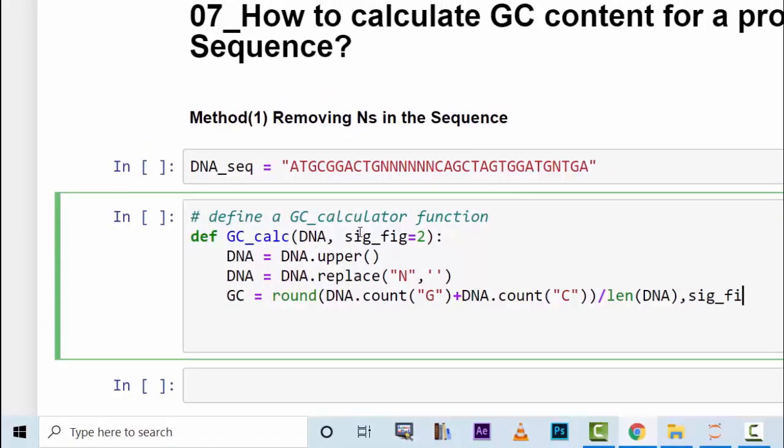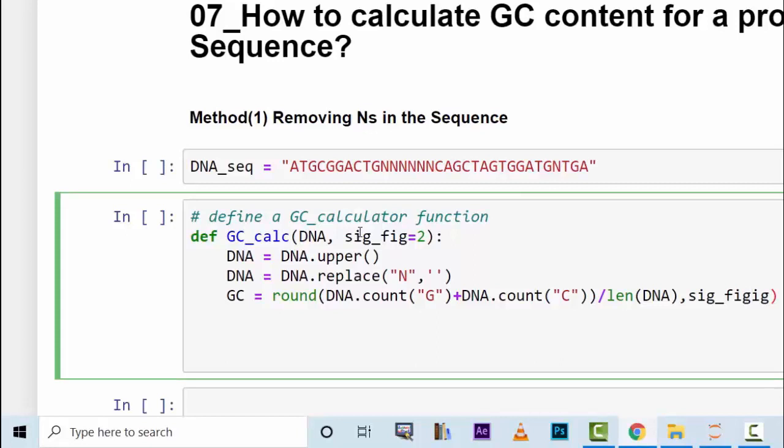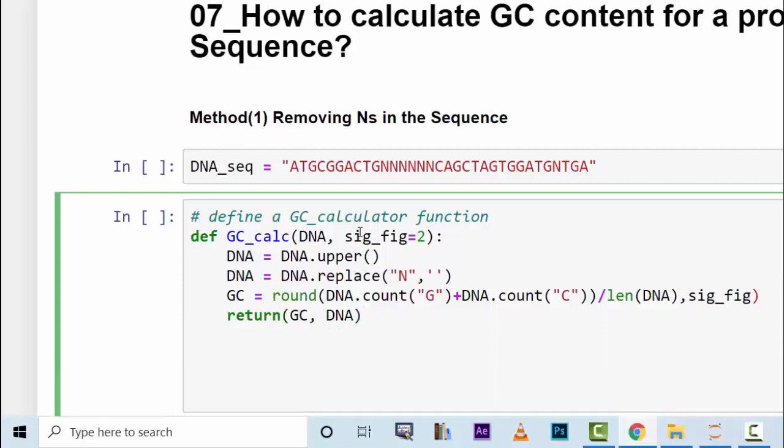Now you have to round this up to two decimal points since we have the significant figures. We don't have to worry about it. You can also write down two if you'd want that to happen. And you can return the GC. You can return GC plus your DNA sequence to see what happened to your DNA sequence.